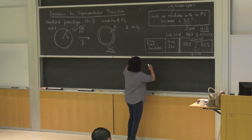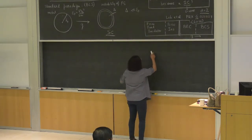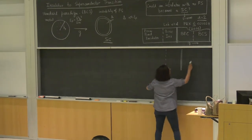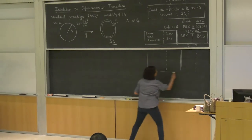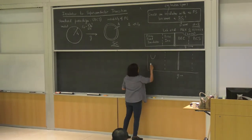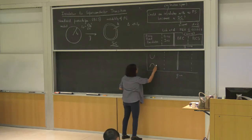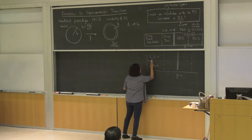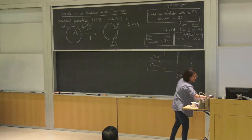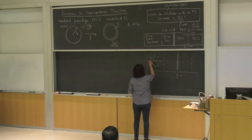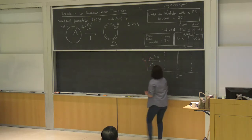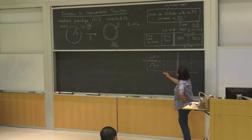The result is that there are necessarily two bosonic phases that intervene before a band insulator can become a standard BCS superconductor. Let me say in a nutshell what these states are. Since I have a band insulator, I have these two bands — a valence band and a conduction band — and let me set the chemical potential in the middle.